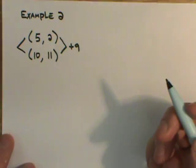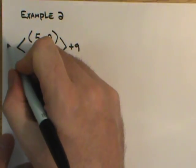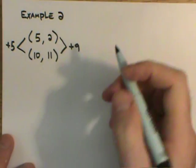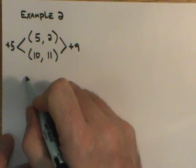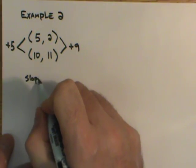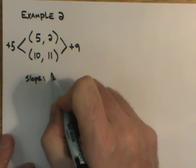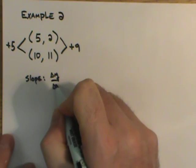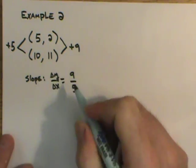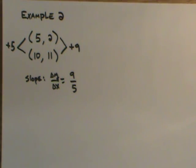How do you go from 5 to 10? Again, hopefully you say add 5. That means that we have a slope defined as delta y over delta x of 9 fifths. We're going to leave that as an improper fraction.